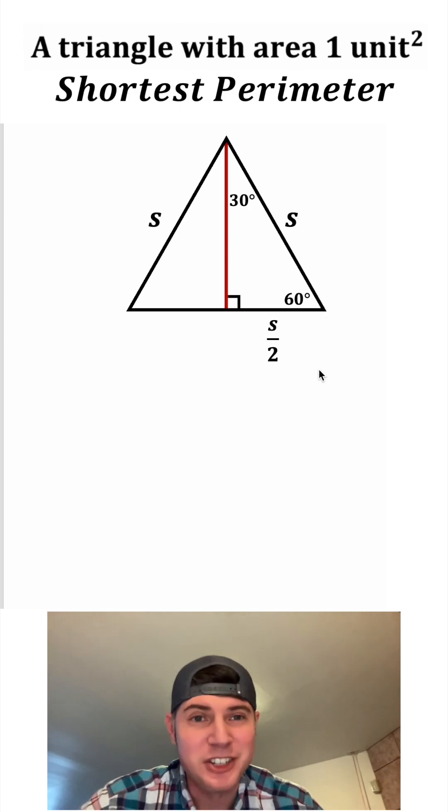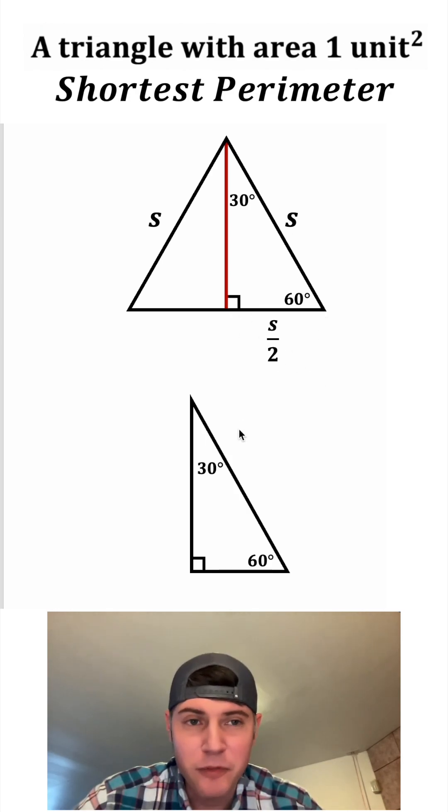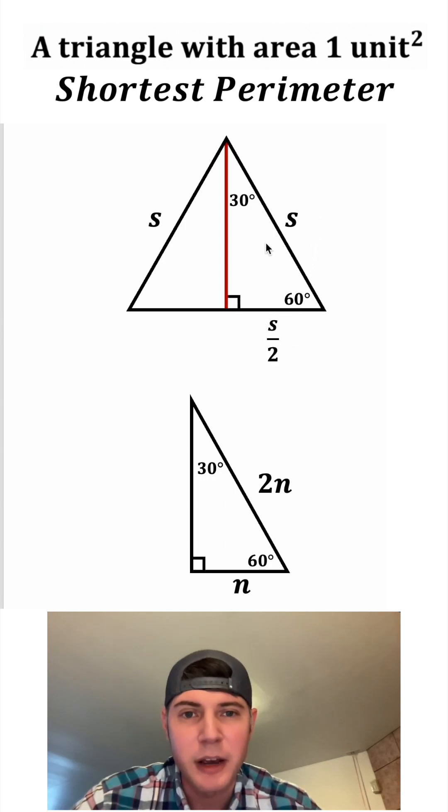A 30-60-90 triangle is a special type of triangle. All of them follow the same pattern. If the side opposite the 30 degrees is some value N, the hypotenuse will always be twice as big as that. And we can see that's happening here as well. We have an S over two here and we have an S right here. This side is twice as long as this side.